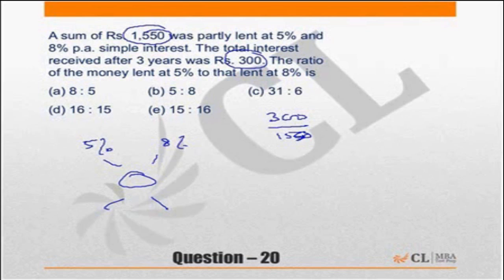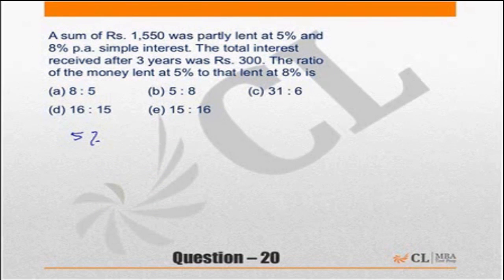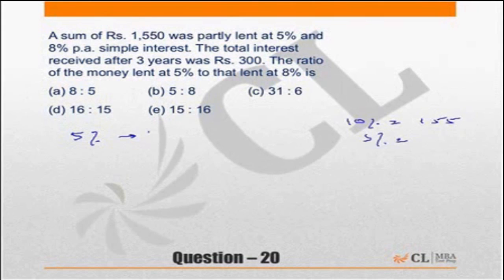So for this question, my advice is: what interest do you earn at 5% on the entire ₹1550? 10% of 1550 is ₹155, so 5% is ₹77.5. You would have received ₹77.5 per year at 5%.